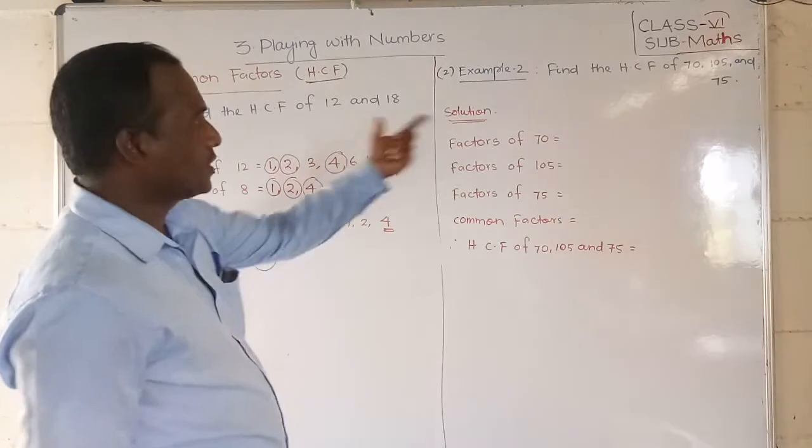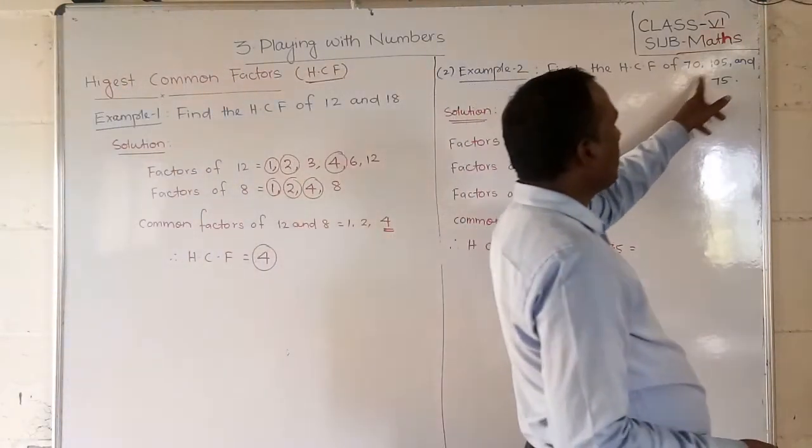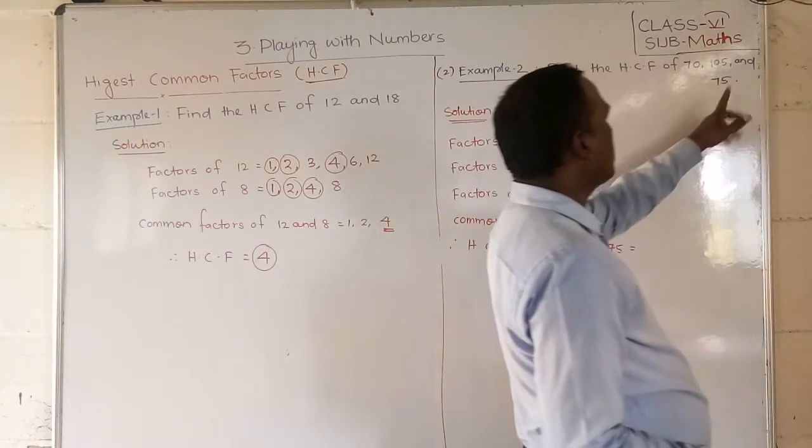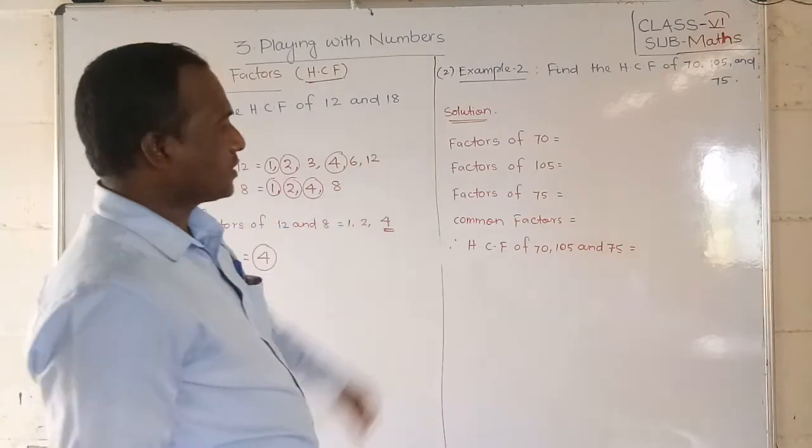Next, we can go for another example which I have mentioned here. Find the HCF of 70, 105, and 75. Same like before, with 3 numbers, find out the factors first of all.